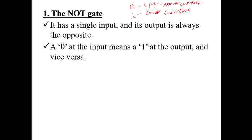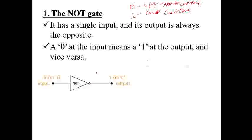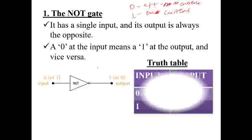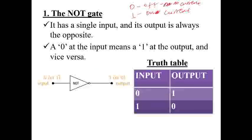Vice versa: if the input is 0 the output is 1, and if the input is 1 the output is 0. The symbol for the NOT gate in a circuit is similar to a diode symbol but without the line at the output point. Looking at the truth table: input 0 gives output 1, and input 1 gives output 0.